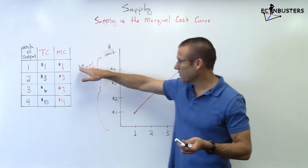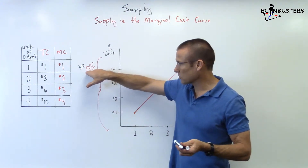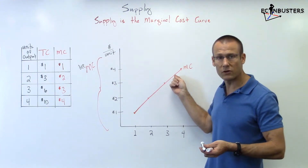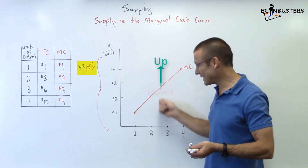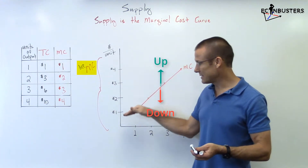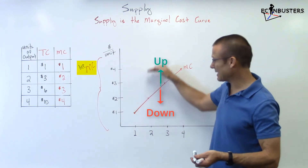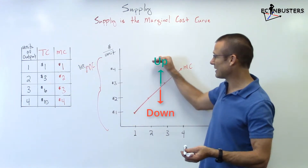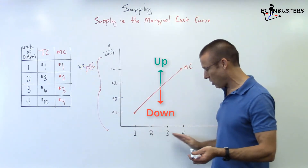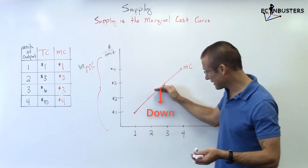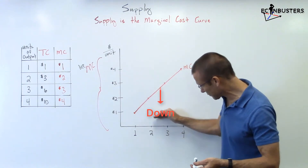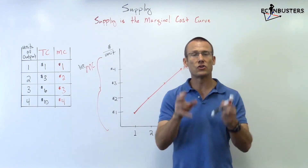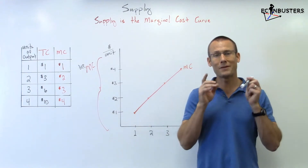Since marginal cost is the dependent variable, we're going to refer to this curve shifting up and down. When the dependent is increasing at all independent values, or decreasing at all independent values, the curve shifts up and down.